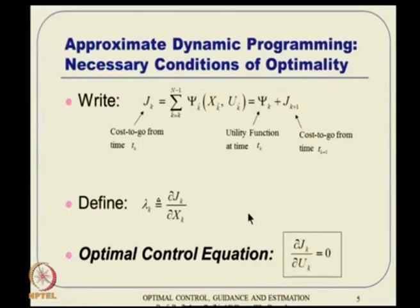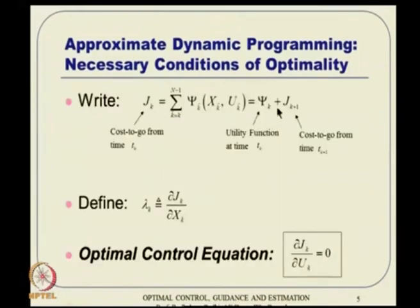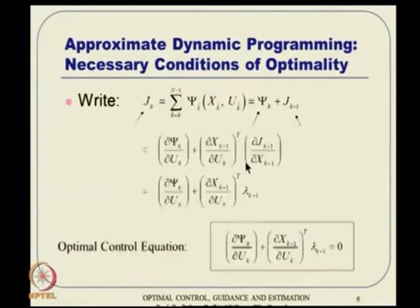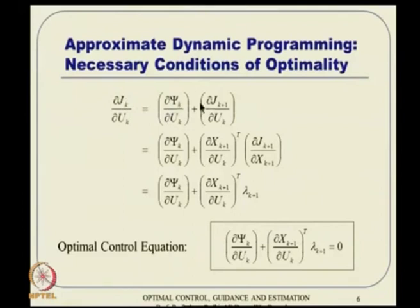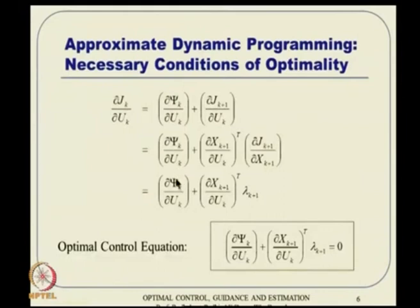Since J_k equals psi_k plus J_{k+1}, the partial derivative of J_k with respect to u_k has two terms. The first term is the direct derivative of psi_k with respect to u_k, which we keep as is. The second term, the derivative of J_{k+1} with respect to u_k, is felt through x_{k+1} via the system dynamics. Applying a control u_k results in a perturbation in x_{k+1}, and since J_{k+1} is a function of x_{k+1}, this must be accounted for using the chain rule.